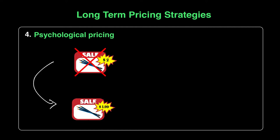Next up is what we know as psychological pricing. This is where the marketing people are trying to play with the minds of the consumer. Your eyes see it, your mind believes it, but it's not really true — that's what they want you to feel at that time.